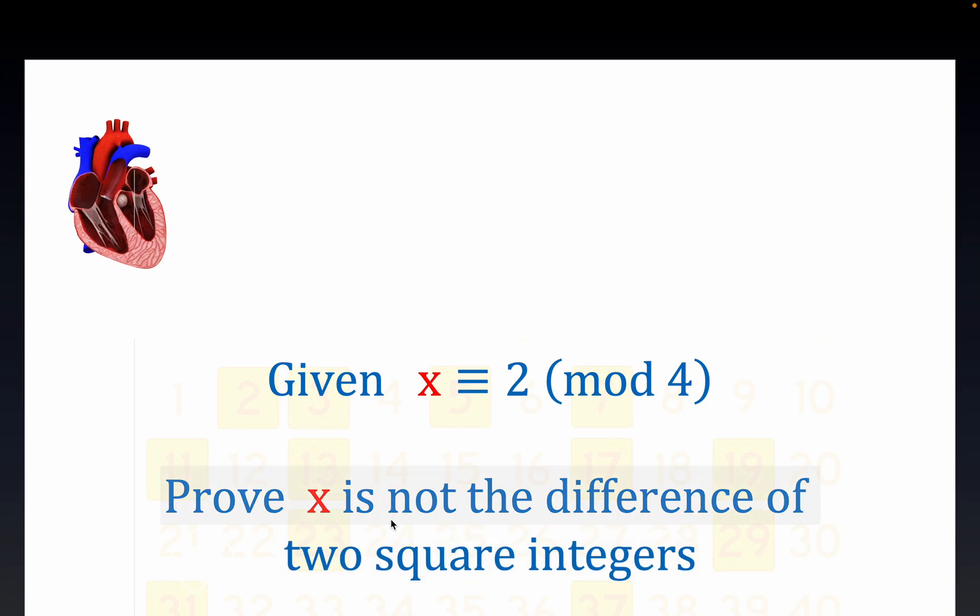Tonight we're trying to show that any x that leaves a remainder of 2 when divided by 4 is not the difference of two square integers.